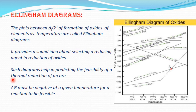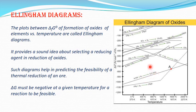This diagram mainly consists of Gibbs free energy and temperature, and the delta G of formation of various metal oxides. This diagram will clearly give an idea about the selection of a reducing agent for reduction of a particular metal oxide.